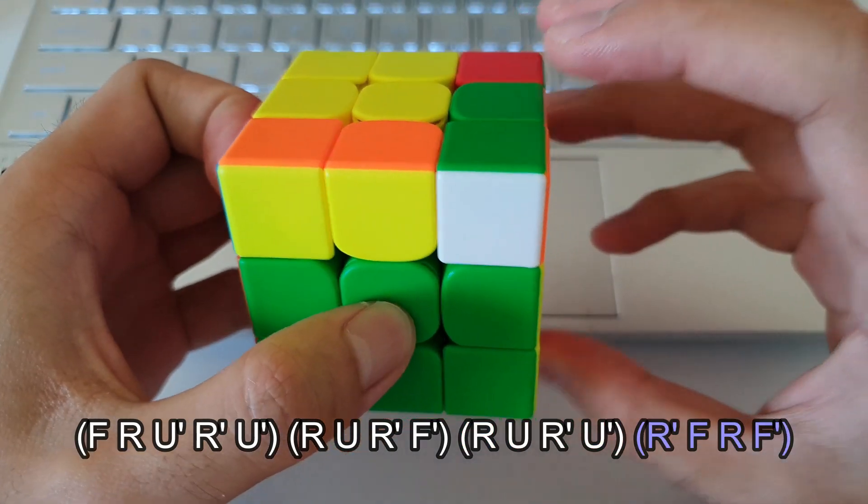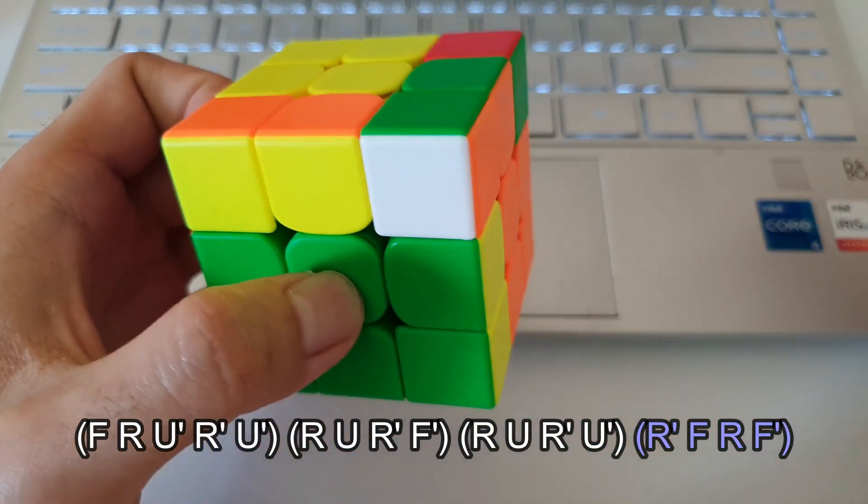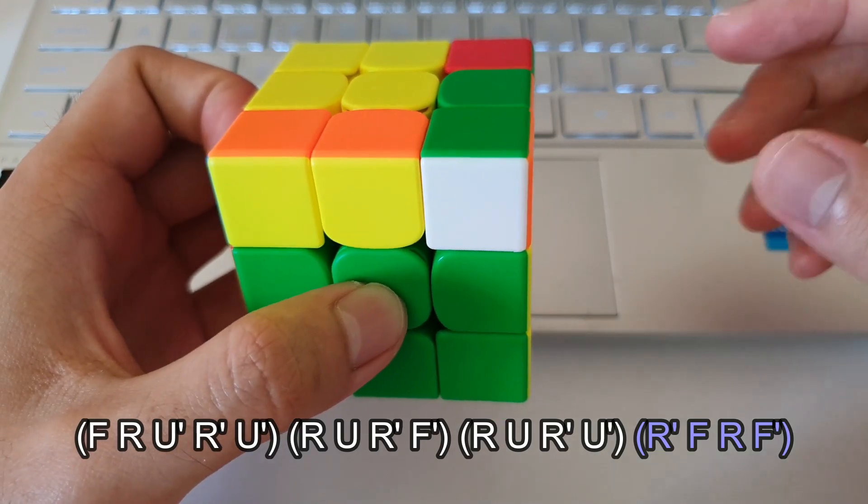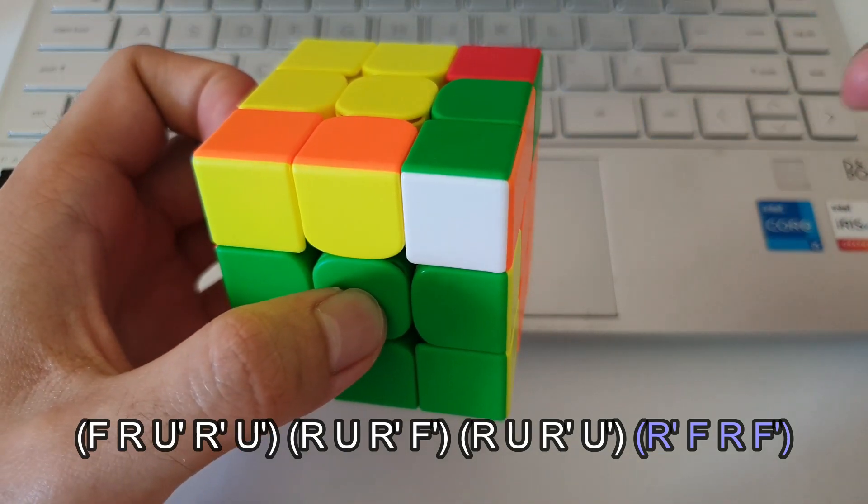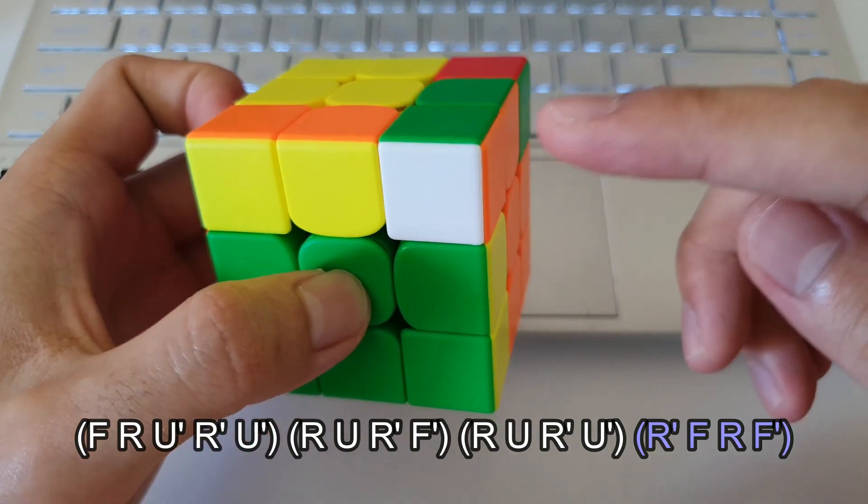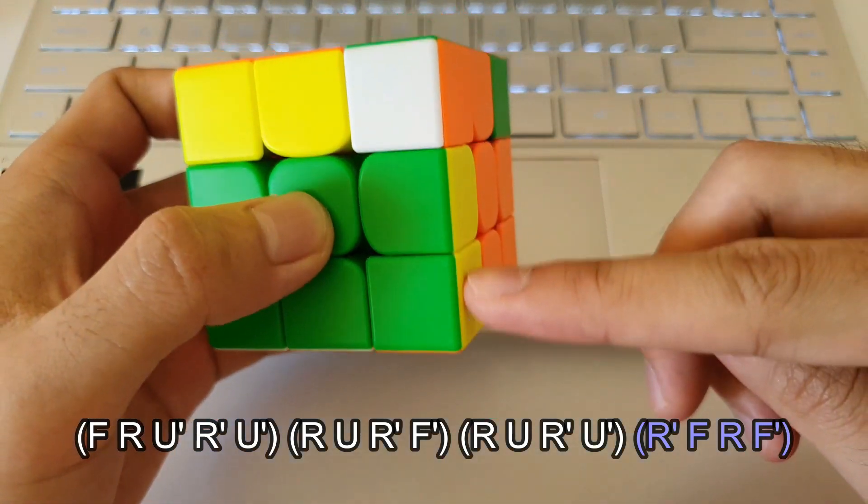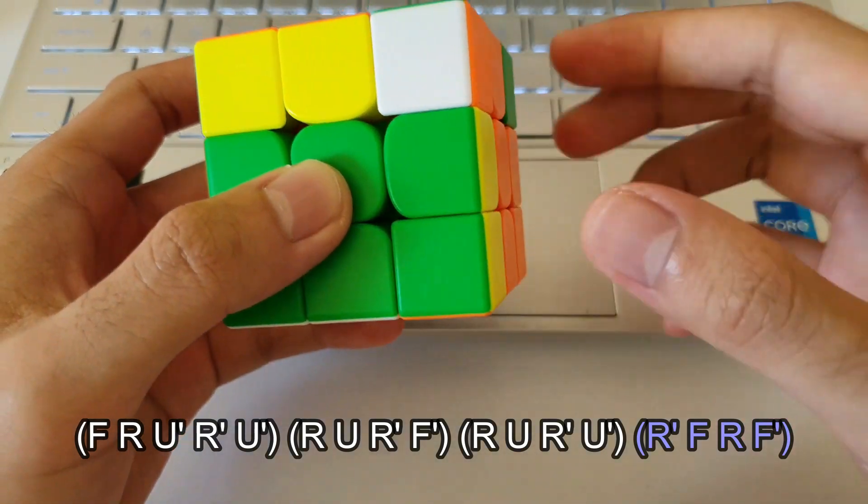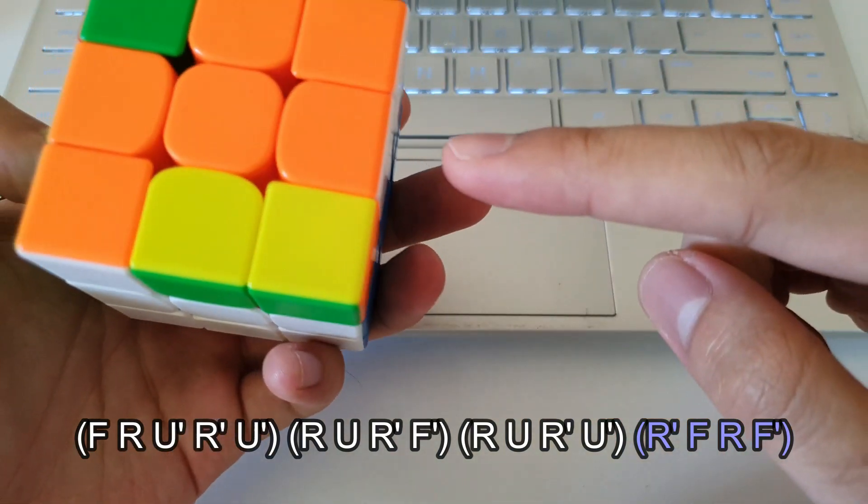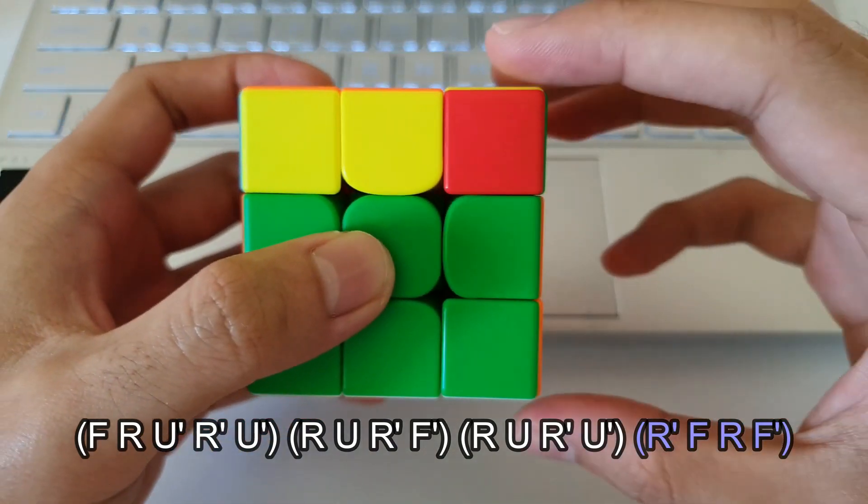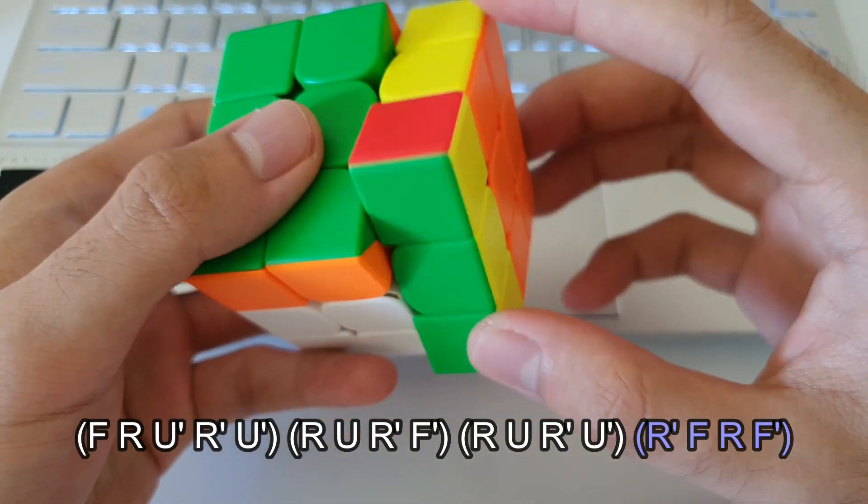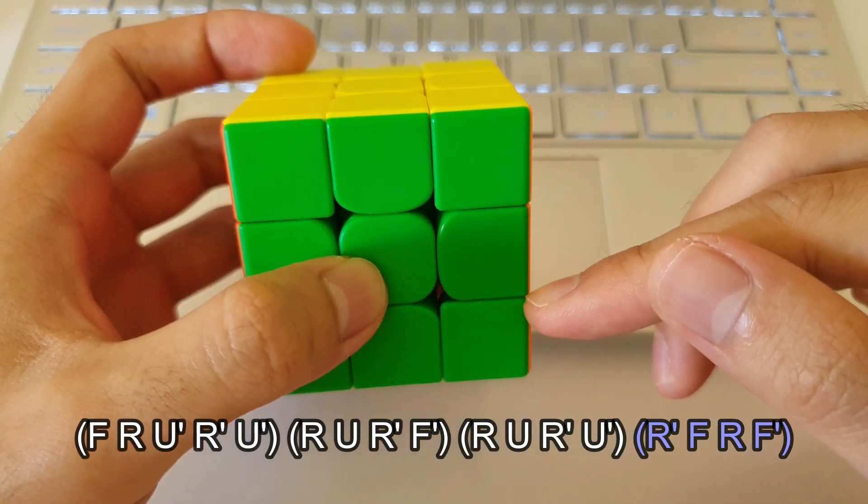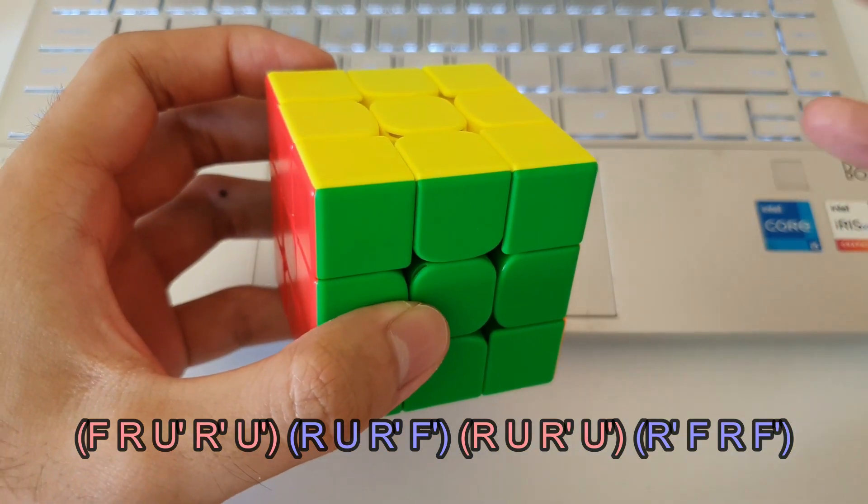And then the final four moves, you may recognize it, you may not. But it's actually the Sledgehammer Move. So for those who know the Sledgehammer, these last four moves will definitely be very familiar. If you don't know what the Sledgehammer is, you can think of it as inserting this F2L pair into this slot. But instead of inserting it the regular way, we want to move the F2L pair straight into this slot like this. Then we want to restore this cross piece by moving this F2L pair out of the way, restoring this cross piece here, and then moving the F2L pair back into its position. So that's the Sledgehammer Move, and that's the end of the algorithm.